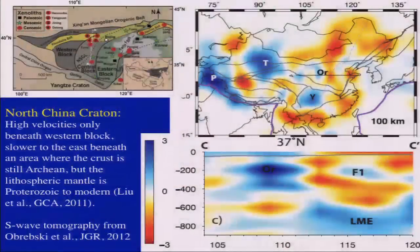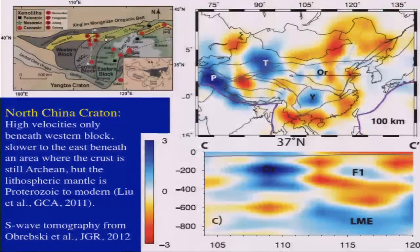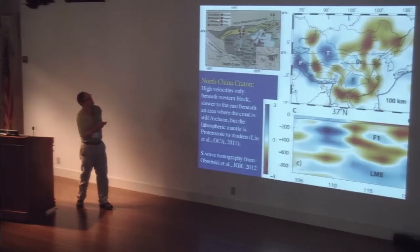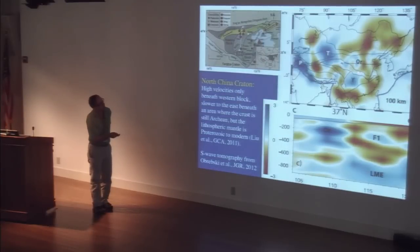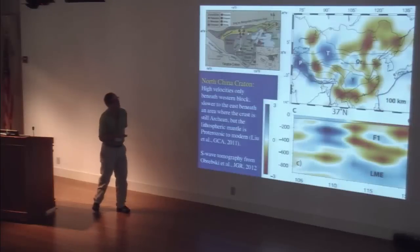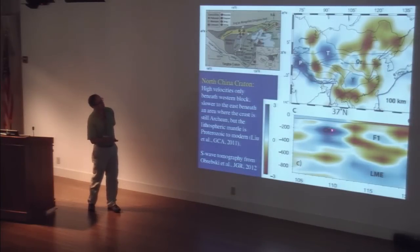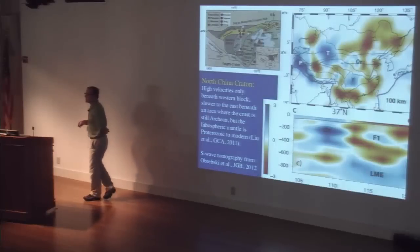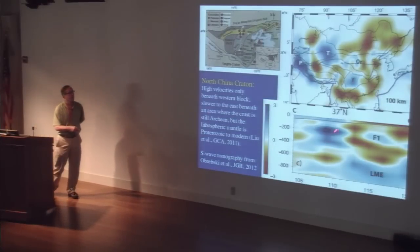The North China craton shows a block map of geology with a good Archean western block and an eastern block that was Archean but doesn't seem to be anymore. The S-wave tomography shows the western block looking cold down to 200 kilometers, but the central and eastern blocks show quite low velocities, especially toward the coast. This is a good example of a craton that's been torn apart — something has gone seriously wrong over the eastern half.